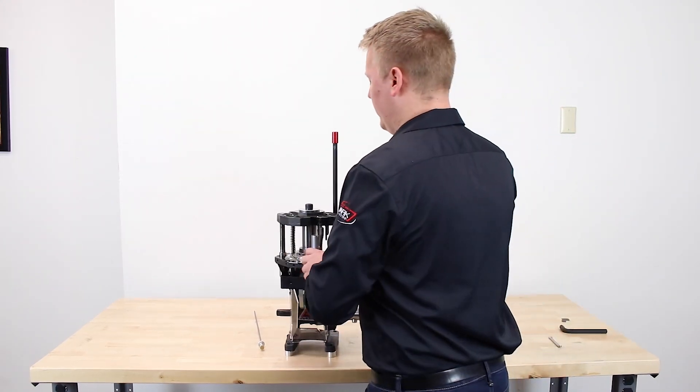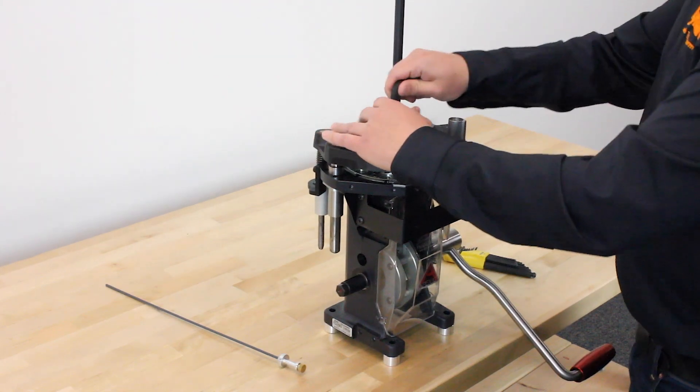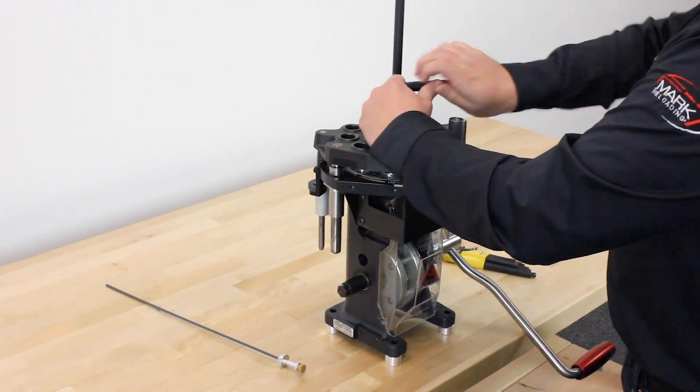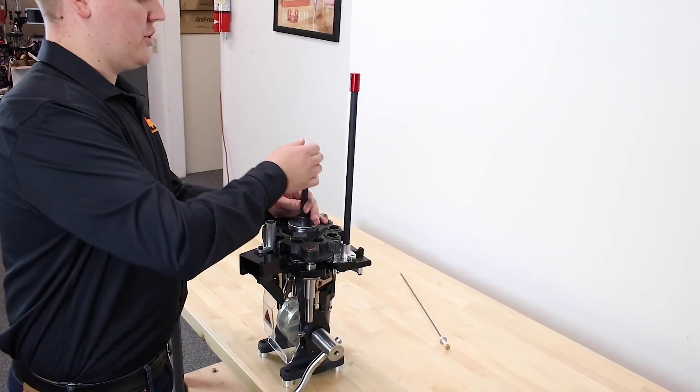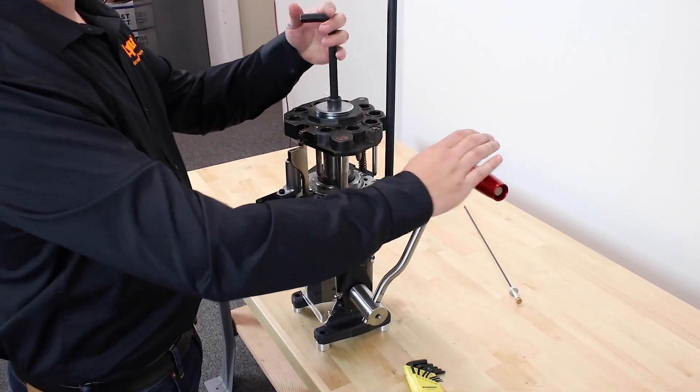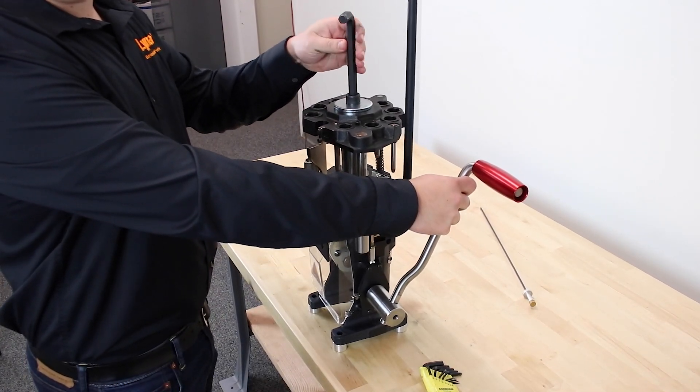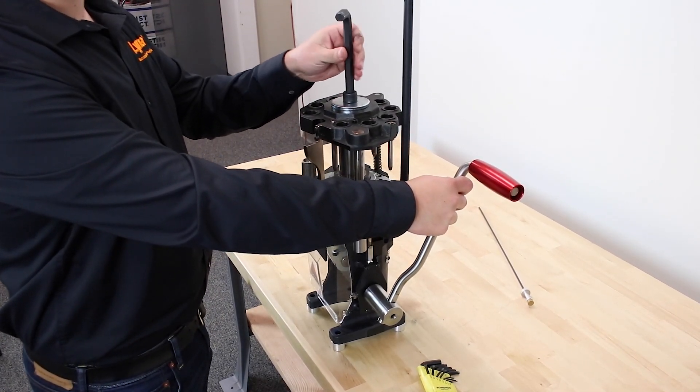First things first, we are going to lower the tool head press and remove the tool head. Suggest loosening it a couple turns. Raise the tool head to take the spring pressure off. You're going to use your right hand to hold the press handle up because it will drop.